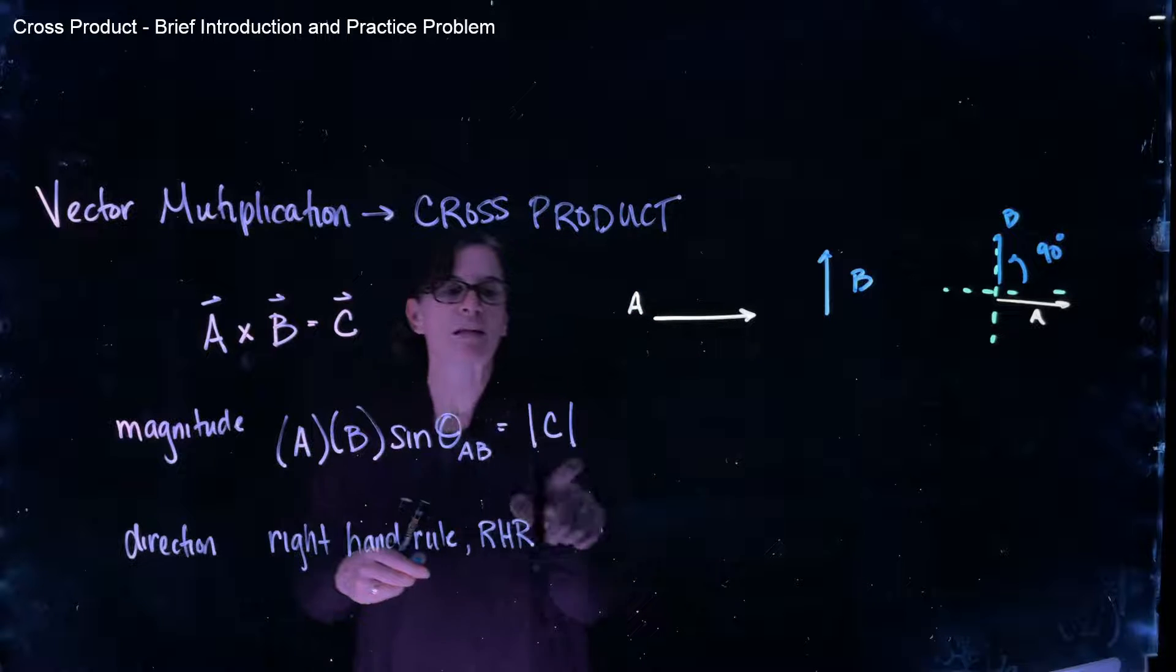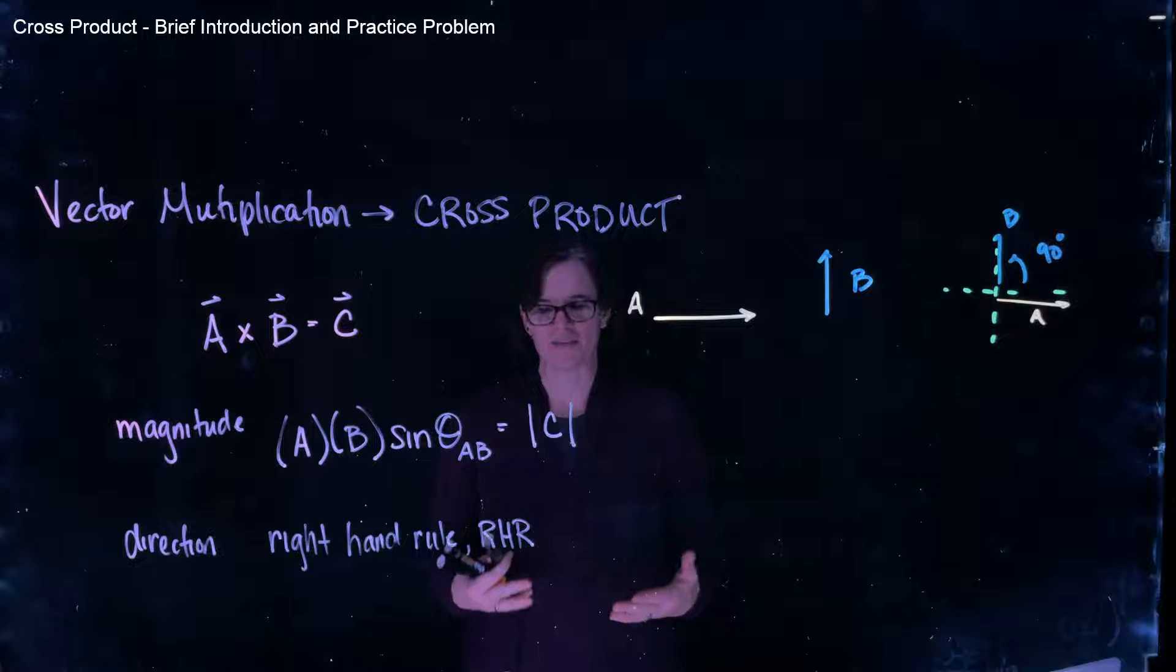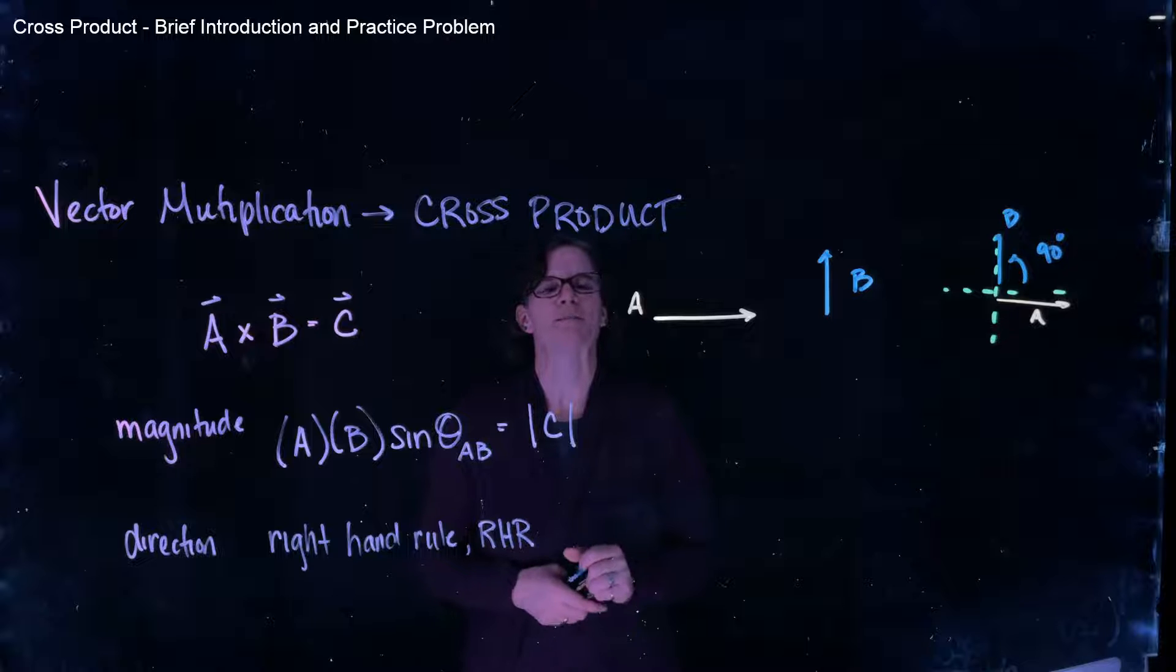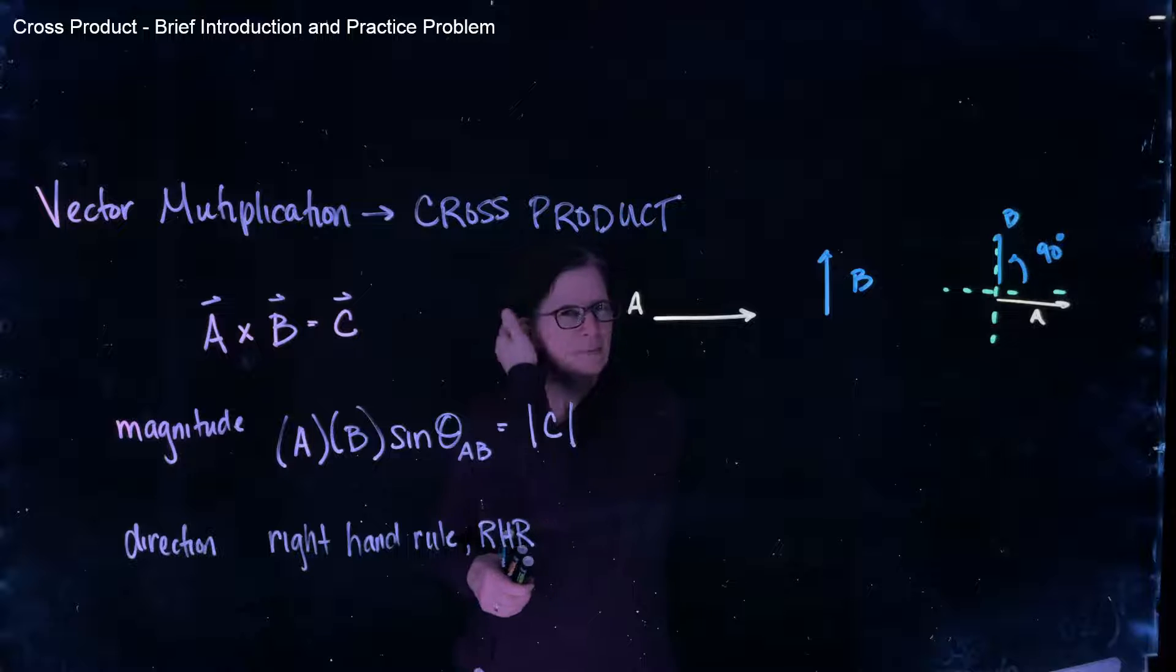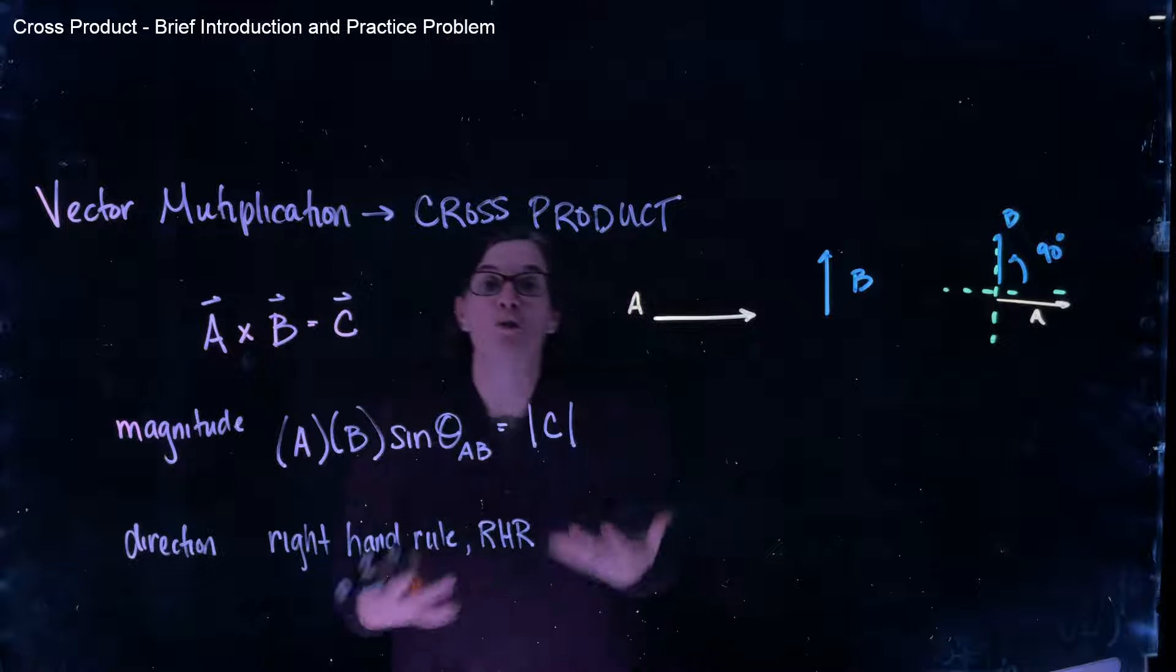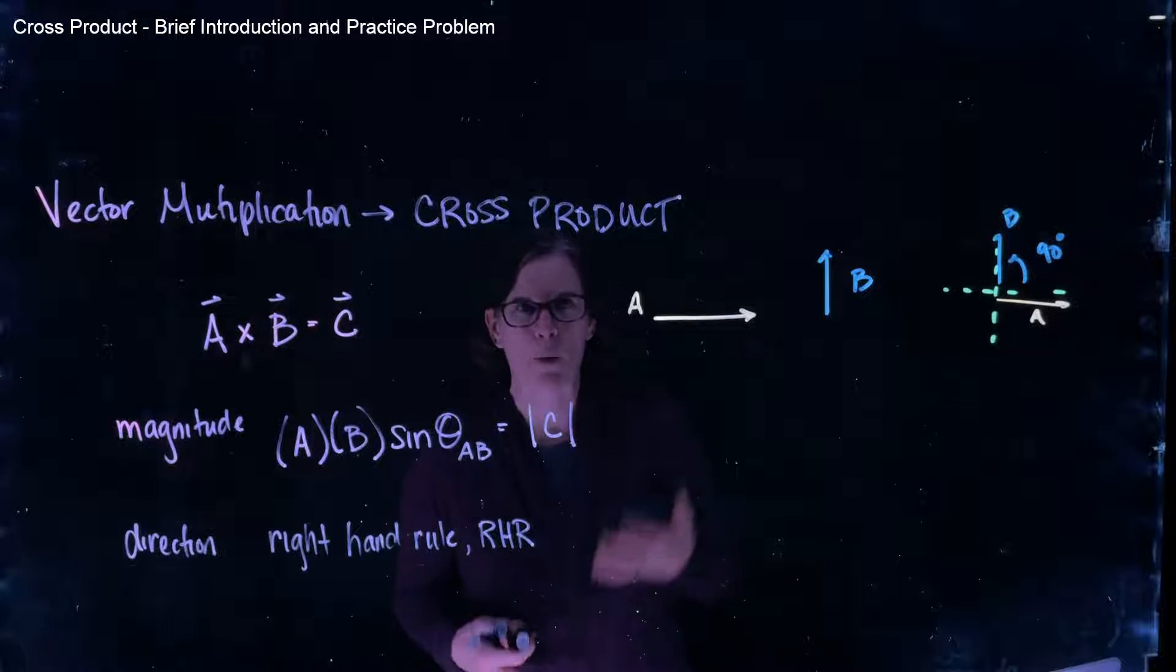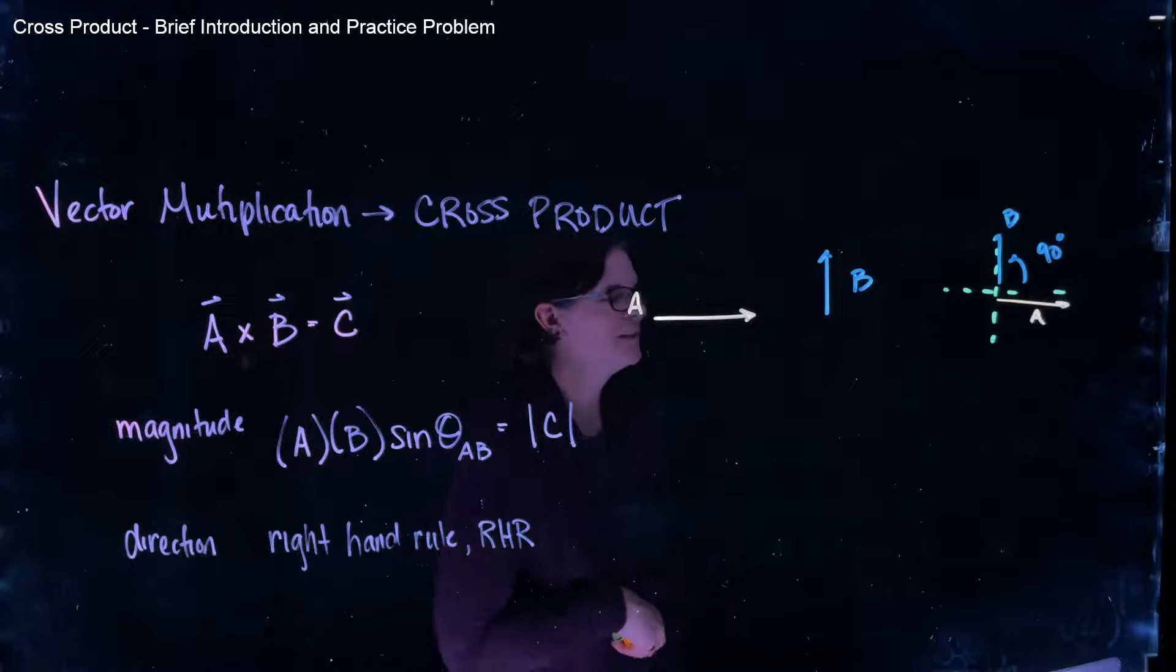All right. So we can get the magnitude of C. But what about the direction of C? So here's the right-hand rule. And I want you to be really, you're going to have to really use your brains for these because I am going to be using my right hand, but you're going to see it as my left hand because of the reverse imaging. So follow along with me with your right hand. And that will help, hopefully, get us through this weirdness of the reverse imaging of the screen.